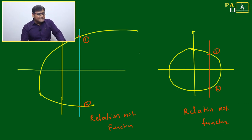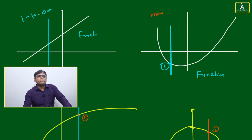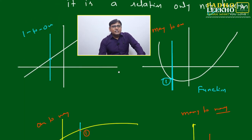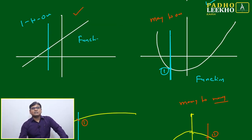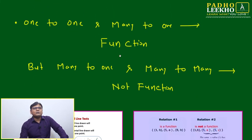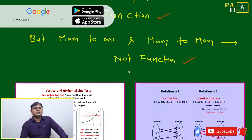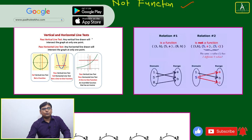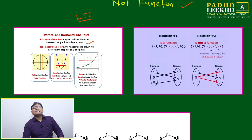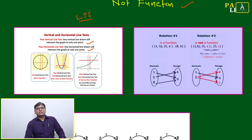To summarize visually: one-to-one is a function, many-to-one is also a function, but one-to-many and many-to-many are not functions — they are relations only. One-to-one and many-to-one pass the vertical line test. If a graph passes the vertical line test, it is a function. If it also passes the horizontal line test (cuts at only one point), it is a one-to-one function. If it fails the horizontal line test, it is a many-to-one function.